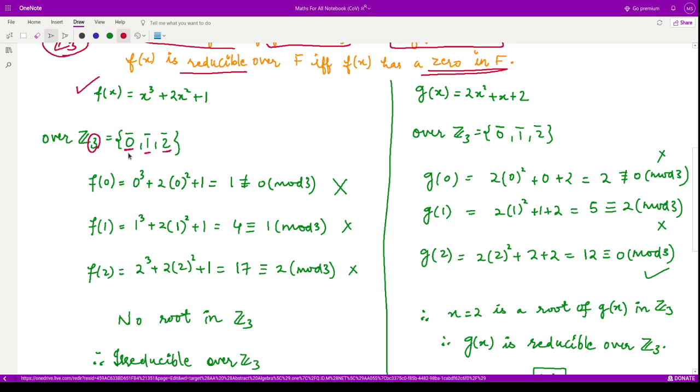So the only possibility for a root is 0, 1, or 2. Let us check each one by one. When you put 0 into this polynomial, you will get f(0) as 0³ + 2(0²) + 1, which comes out to be 1, and which is not equal to 0 mod 3. This is not a root.